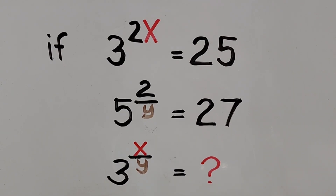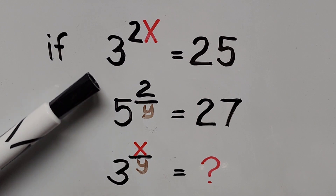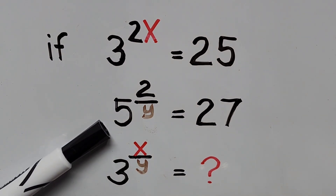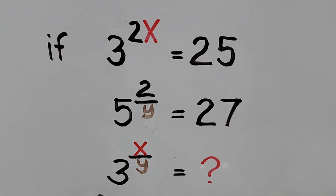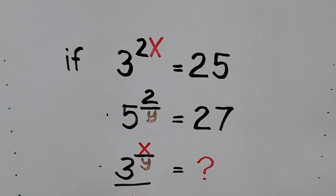Hello everyone, we have a nice given system of exponential equations and we're being asked to evaluate 3 to the power of x divided by y. The condition is: 3 to the power of 2x equals 25 and 5 to the power of 2 divided by y equals 27. In this video I'll be presenting two methods: the first method will use substitution, and the second will use the laws of logarithm.